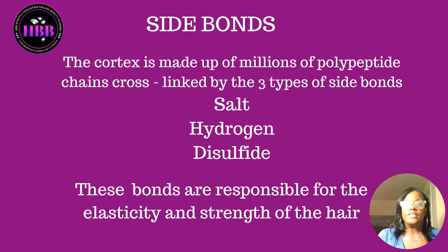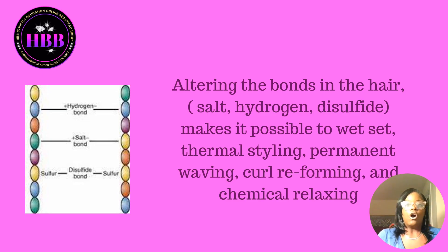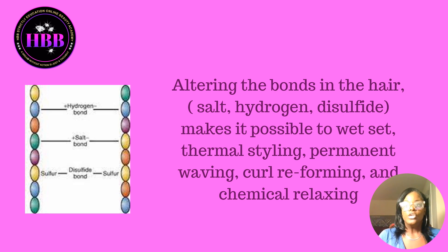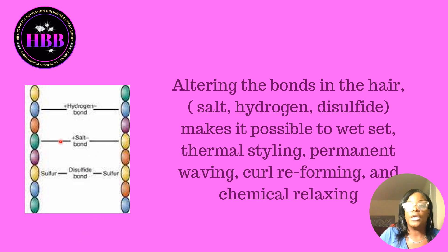The cortex is made up of millions of polypeptide chains cross-linked by three types of side bonds: salt bonds, hydrogen bonds, and disulfide bonds. These bonds are responsible for the elasticity and strength of the hair. Altering these bonds makes it possible to wet set, thermal style, permanent wave, curl reform, and chemically relax hair.